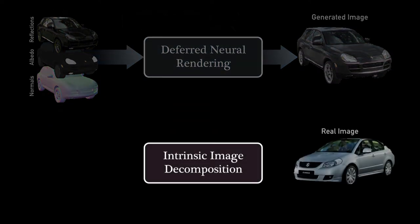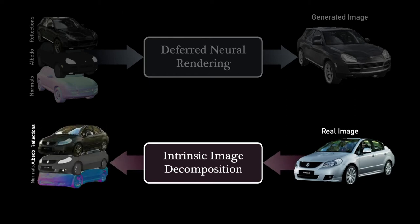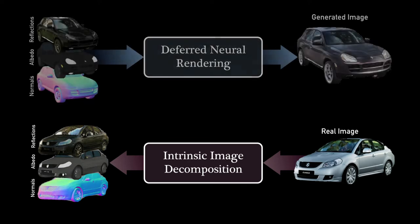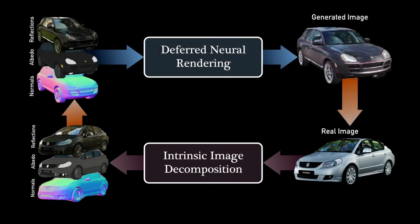The inverse of this process is intrinsic image decomposition, where the goal is to get intrinsic properties of real images. We leverage this inverse nature of the two problems to train them jointly without any paired training data in a framework we call intrinsic autoencoders.